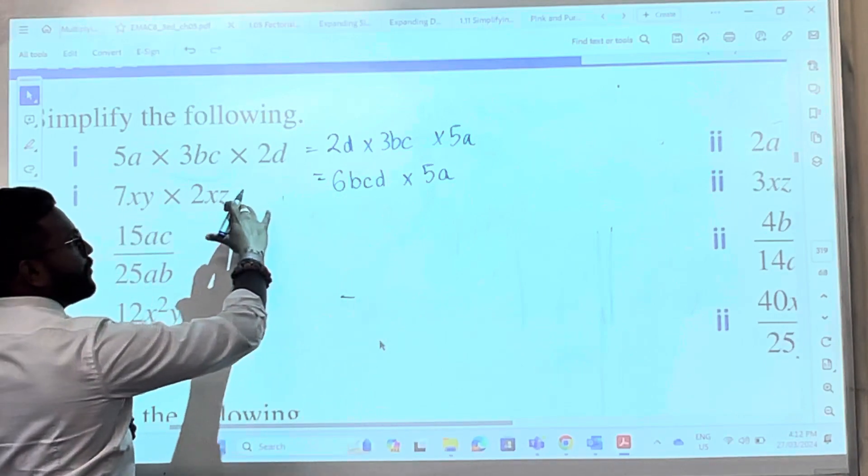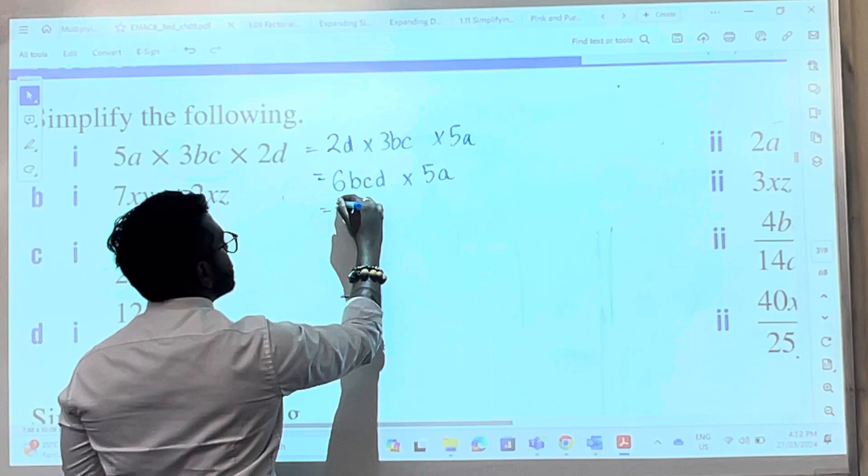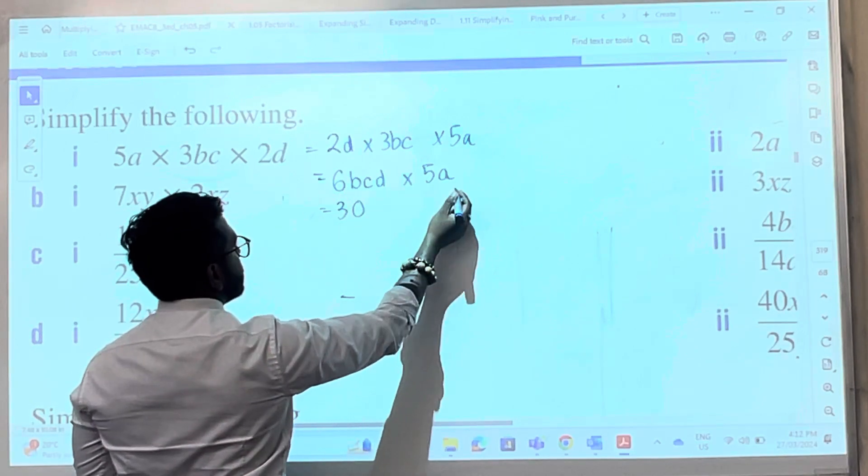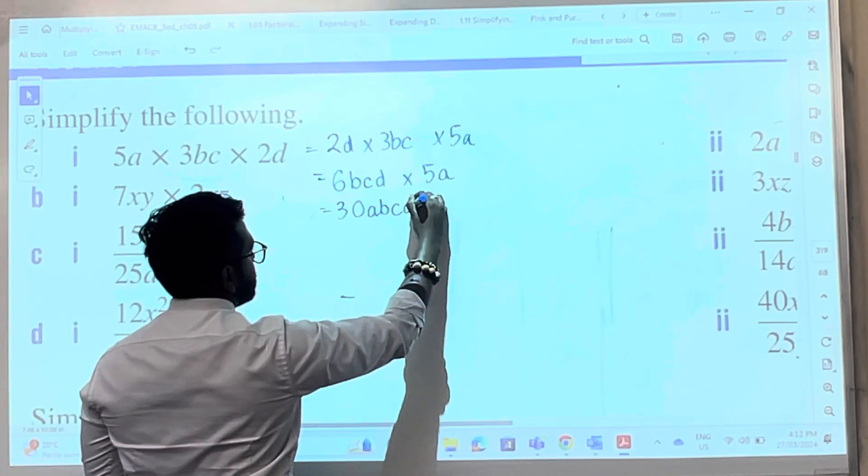So you're going to notice that I'm putting everything in the one line. Now I'm going to multiply the 5 and the 6, which is 30. Then I've got the a. Is there any a's here? No. So it's going to be a, b, c, d.